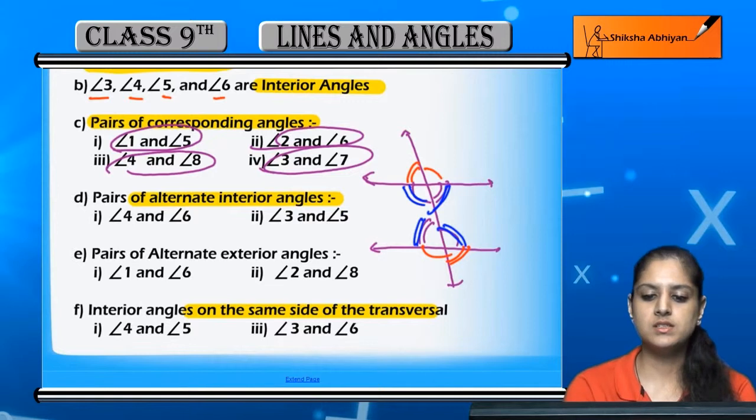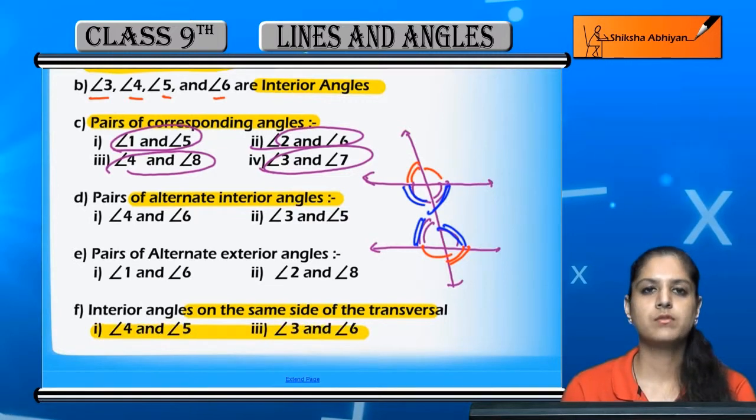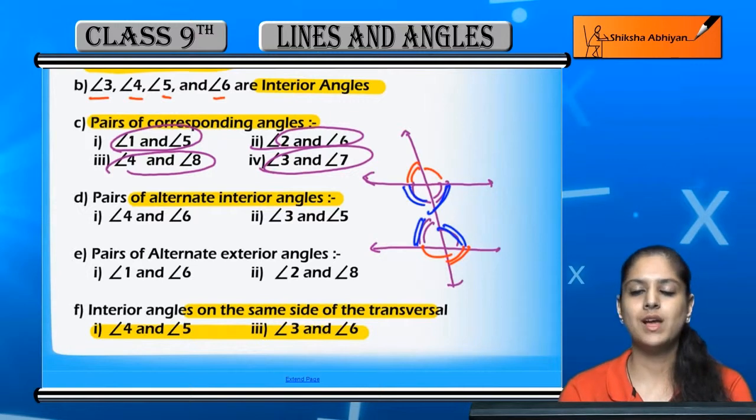So we will name the angles when a transversal is there and they intersect the two lines.